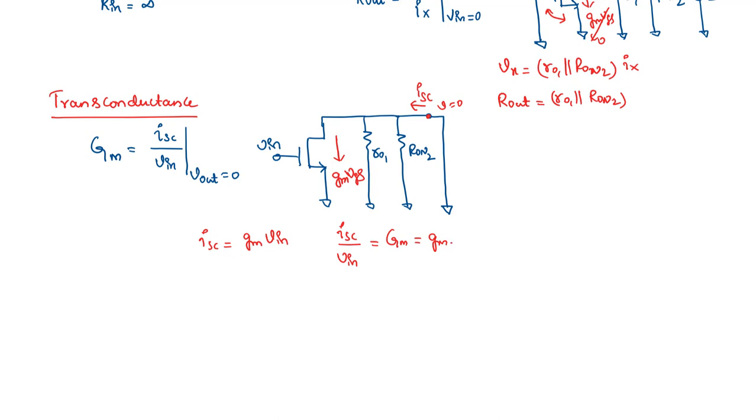Which means the transconductance of this entire stage is equal to the transconductance of the NMOS transistor we have, which is M1. In fact, let me put this Gm1 because we have named this M1 transistor.